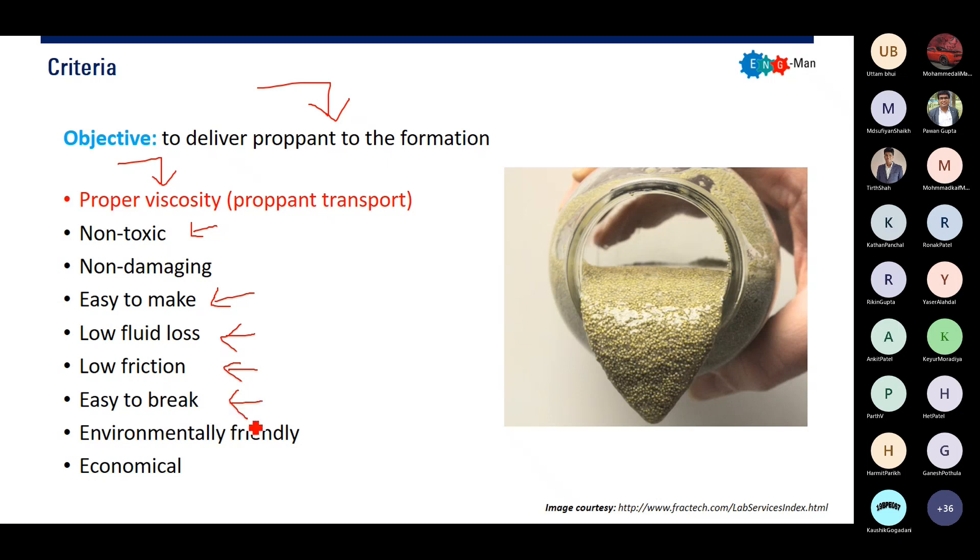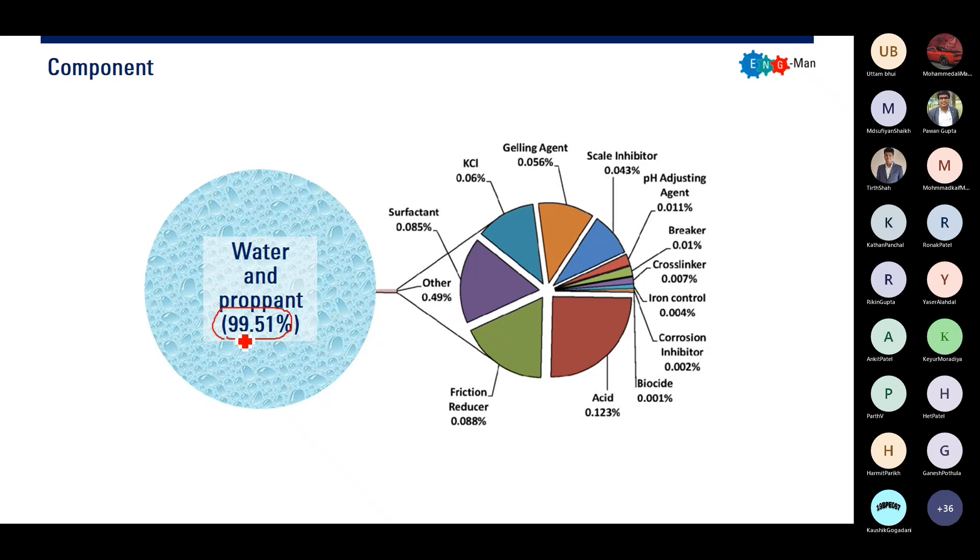This is the component. The frag fluid is composed of water and propane, almost 100 percent, but we also have surfactant, KCl, gelling agent to create the gel, friction reducer, biocide to prevent bacteria, iron control, corrosion inhibitor to prevent corrosion, cross linker to increase the viscosity, breaker to break the frag fluid after it has entered the reservoir and created fracture, pH adjusting agent, and scale inhibitor. KCl is used to avoid clay swelling.